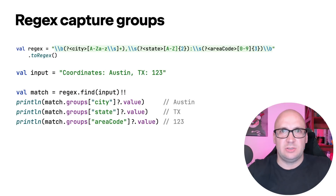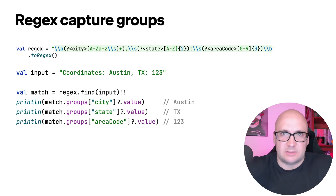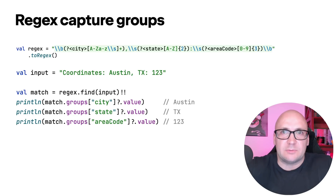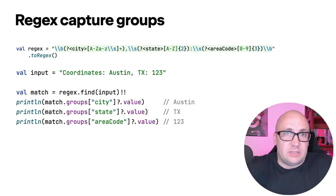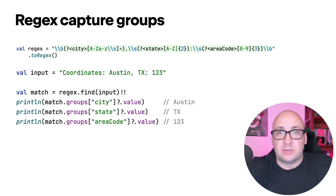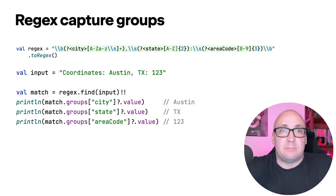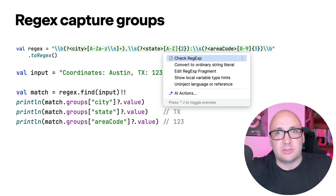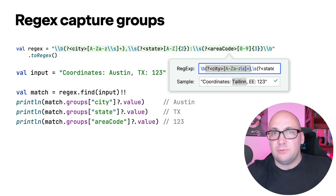Before 1.9, every platform had its own extension to get a regular expression capture group by name. It wasn't possible to have a common function because the standard library had to support JVM targets 1.6 and 1.7. Starting with Kotlin 1.8, the standard library is compiled with JVM target 1.8, so in this release there is now a common property called groups that retrieves a group's contents by name for a regular expression match. The IDE also helps: pressing Alt+Enter to check the regular expression opens a popup where you can validate how it matches input, with capture groups highlighted.